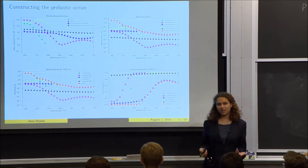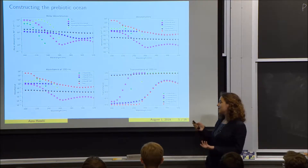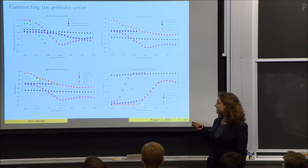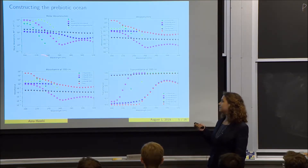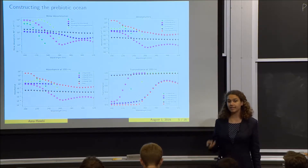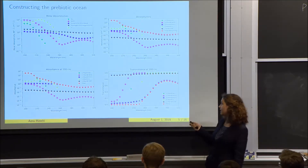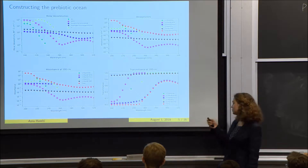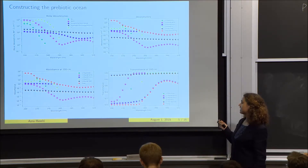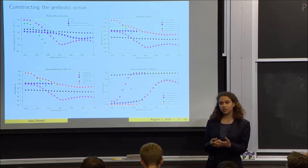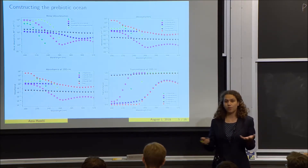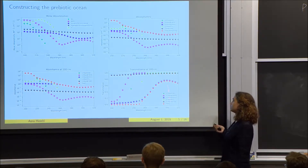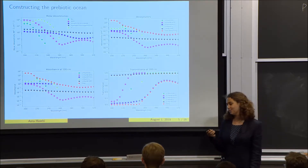To construct a prebiotic ocean model, we have data for the molar absorptivities of the ions we know were present, and those absorptivities depend on the wavelength of light. UV light is high in energy, between 200 and 400 nanometers. We factor in the concentrations of those ions and assume a depth at which we want to examine how much energy was available, moving from absorbance to transmittance.